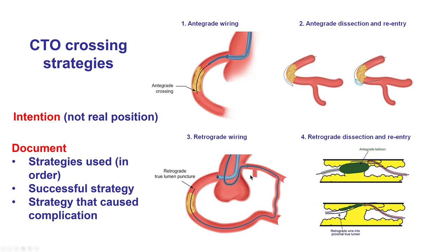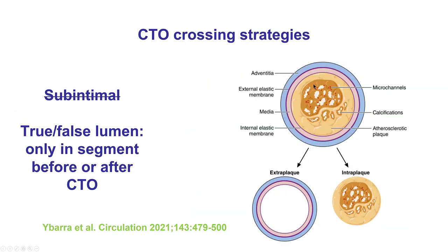There are several crossing techniques for chronic total occlusions that can be broadly categorized into antegrade and retrograde. Within each category, there are subcategories for advancement within the former plaque — intraplaque — or going into the extraplaque space, what we used to call subintimal, and these are the dissection and reentry techniques. So we have antegrade wiring, antegrade dissection and reentry, retrograde wiring, and retrograde dissection and reentry. The new terminology replaces the old terms subintimal and intimal, since it is often very hard to know what is within the former lumen, so the terms currently used are intraplaque and extraplaque.